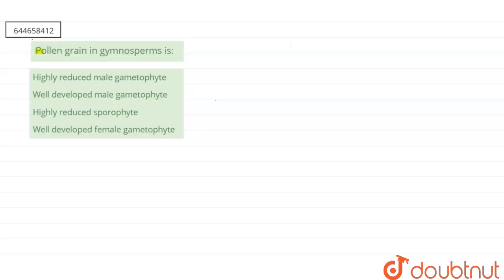Our question says that pollen grain in gymnosperms is: first, highly reduced male gametophyte; second, well-developed male gametophyte; third, highly reduced sporophyte; and fourth, well-developed female gametophyte. So here we are talking about the pollen grain of the gymnosperm.